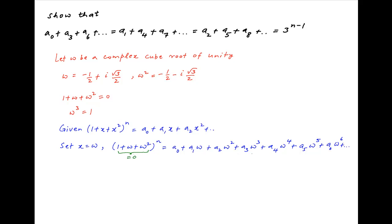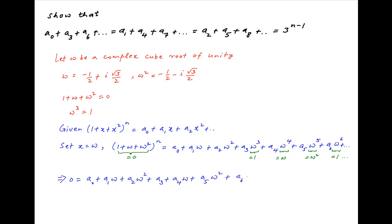Now the left hand side is equal to 0, and on the right hand side, omega cube is equal to 1, omega raised to the power 4 is equal to omega, omega raised to the power 5 is equal to omega square, omega raised to the power 6 is again equal to 1, and so on. Therefore, this equation becomes 0 is equal to a0 plus a1 omega plus a2 omega square plus a3 plus a4 omega plus a5 omega square plus a6 plus a7 omega plus a8 omega square plus and so on.